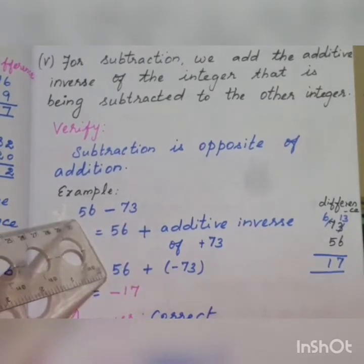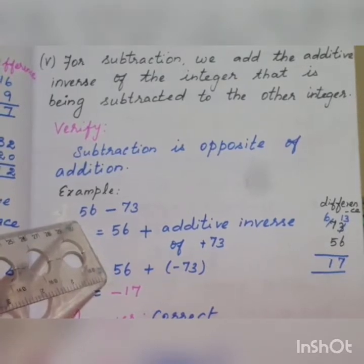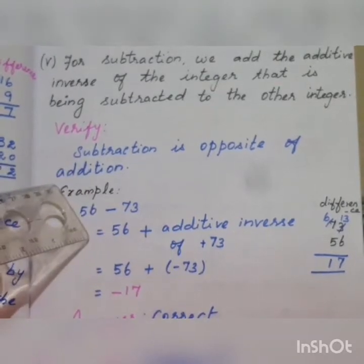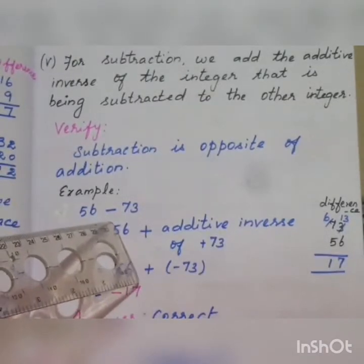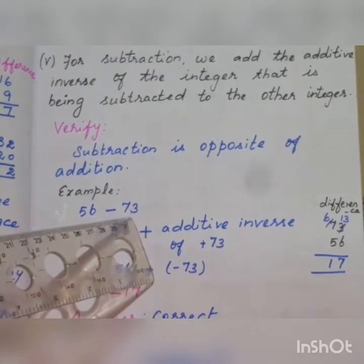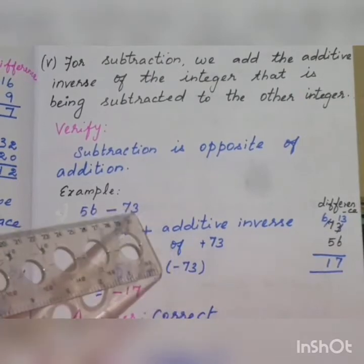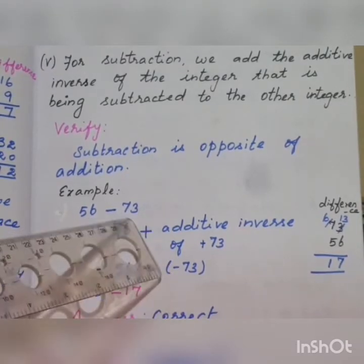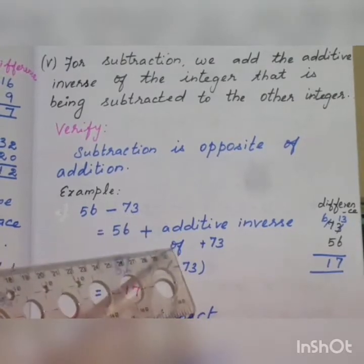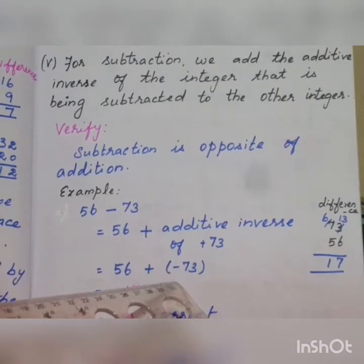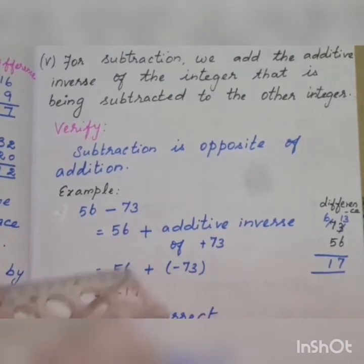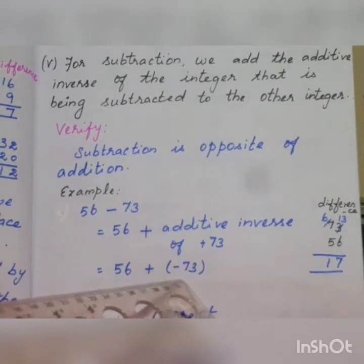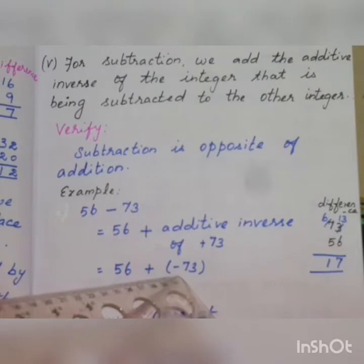We cannot subtract easily because the first number is the smallest number. So what we do? Subtraction is the opposite of addition. The subtraction sign changes to addition sign, and the second number moves to its additive inverse. 73 is a positive number, so additive inverse of 73 is minus 73. So: 56, subtraction sign changes to addition sign, and additive inverse of 73 is minus 73.